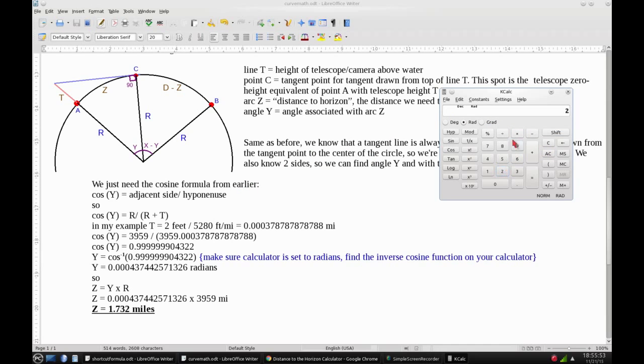So I'm going to divide by 5,280. That gives me that number right here. So now the cosine of Y equals 3,959 divided by 3,959.00037878788.